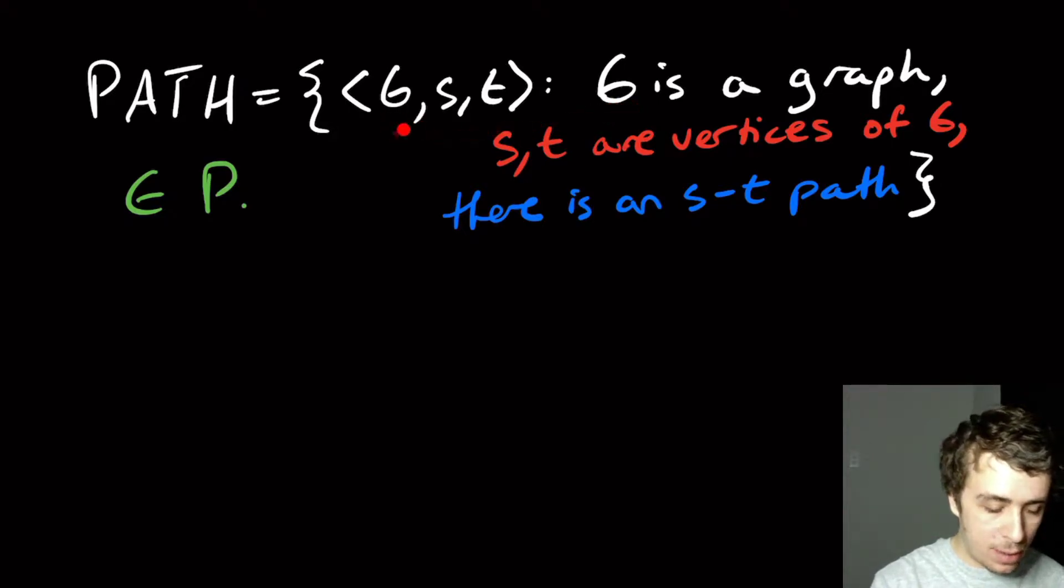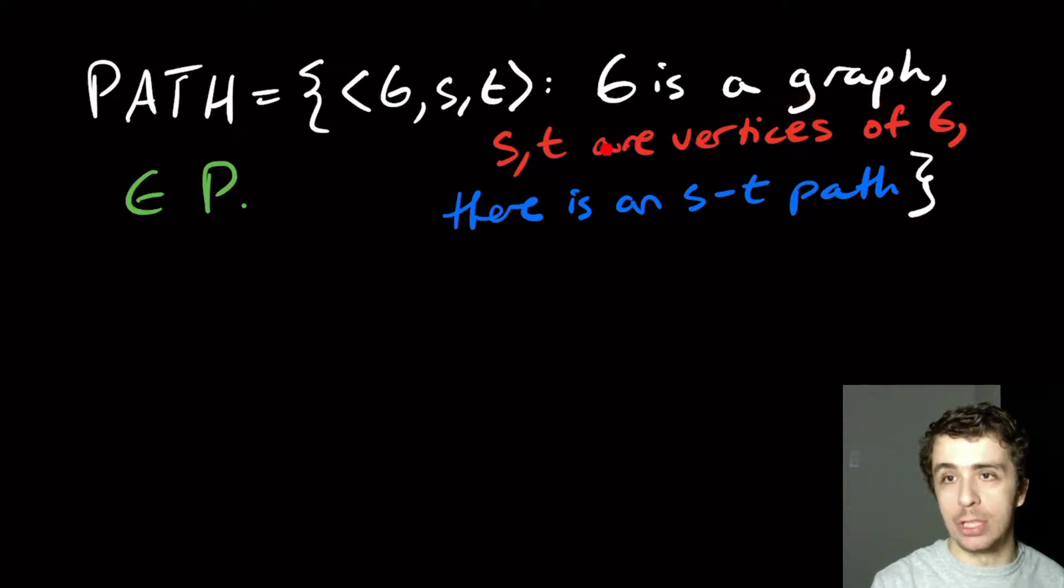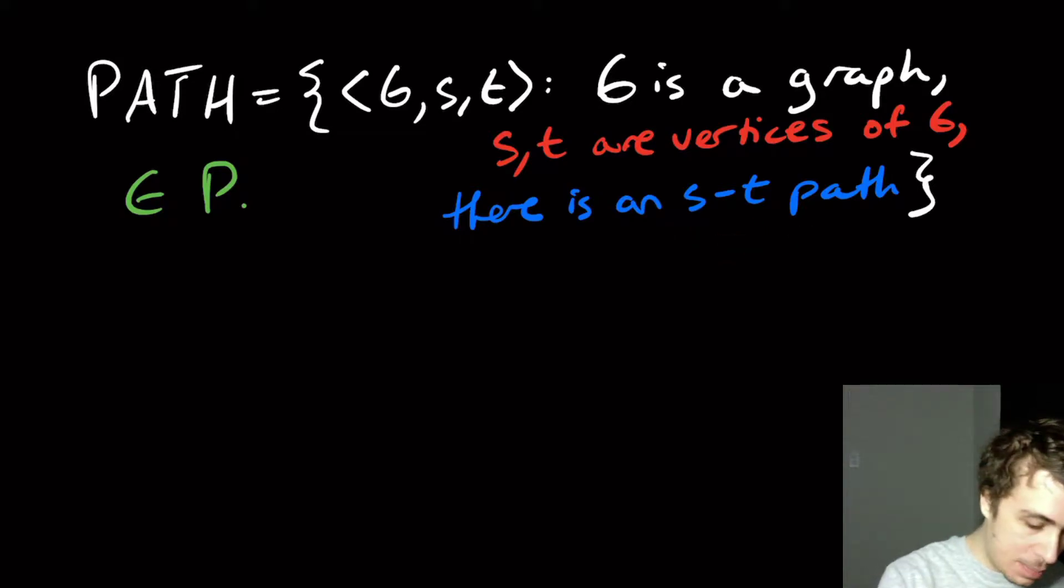Here we have the encoding of a graph and two vertices of that graph. So we have G as a graph, S and T are vertices of G, and there is an S-T path.